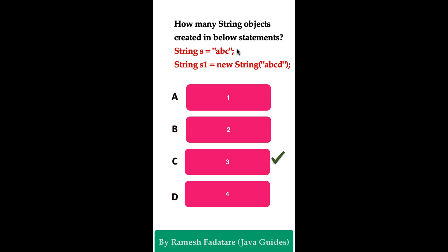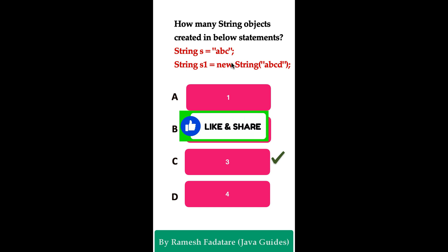The first statement creates one String object — "abc" — in the String Constant Pool, if it does not already exist. The second statement has "abcd" as a string literal, which gets created in the String Constant Pool, and the new String() call creates an additional object in heap memory. So there are three String objects in total.